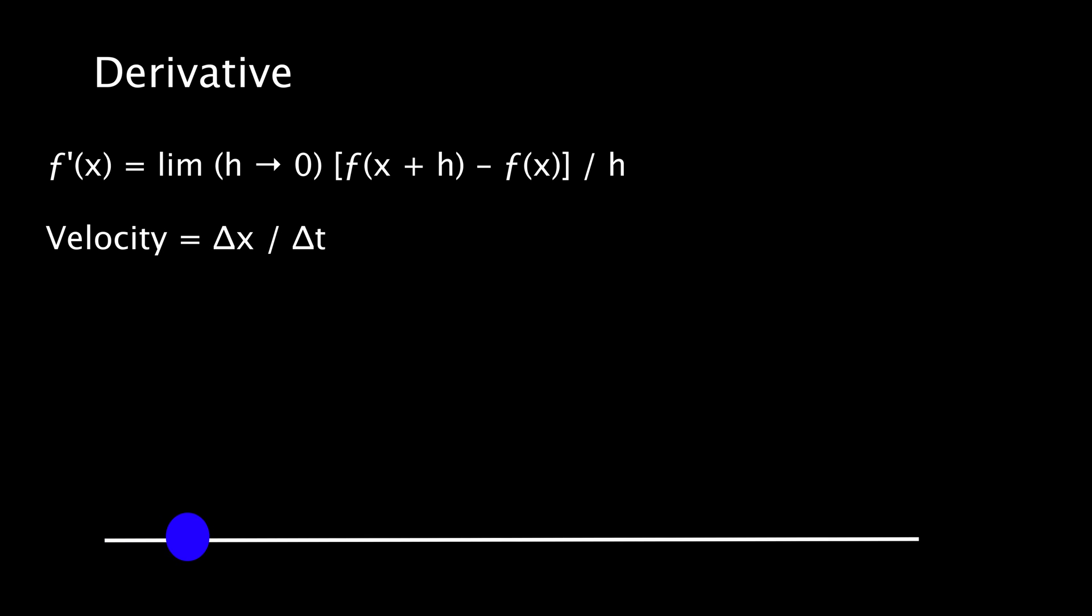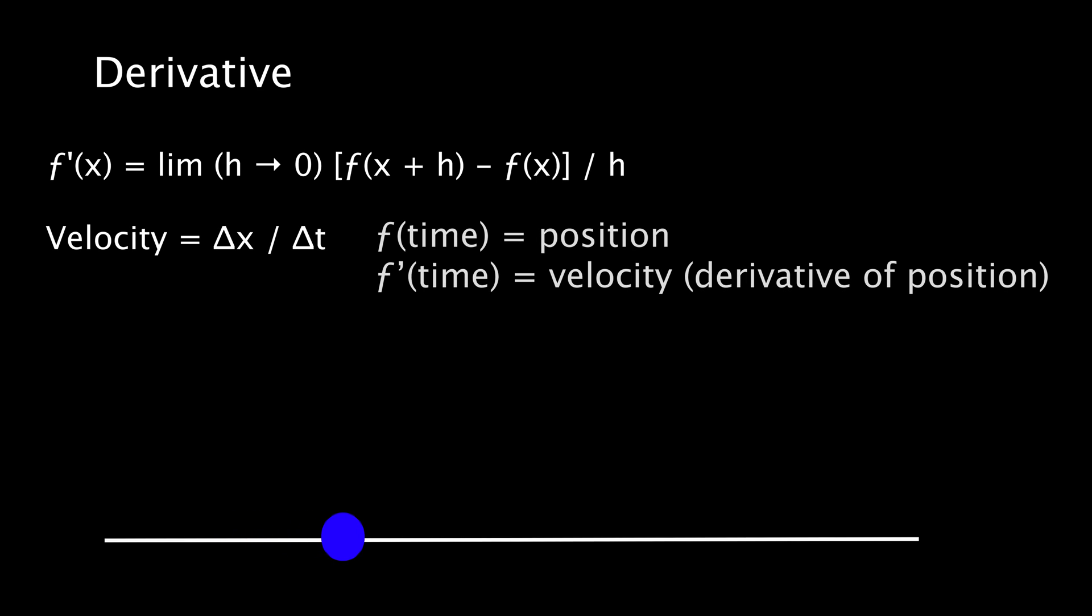A practical example of derivatives in the real world would be the velocity of a moving object. The velocity is the rate of change of the position of an object at any given point in time, so it can be seen as the derivative of the position with respect to time.